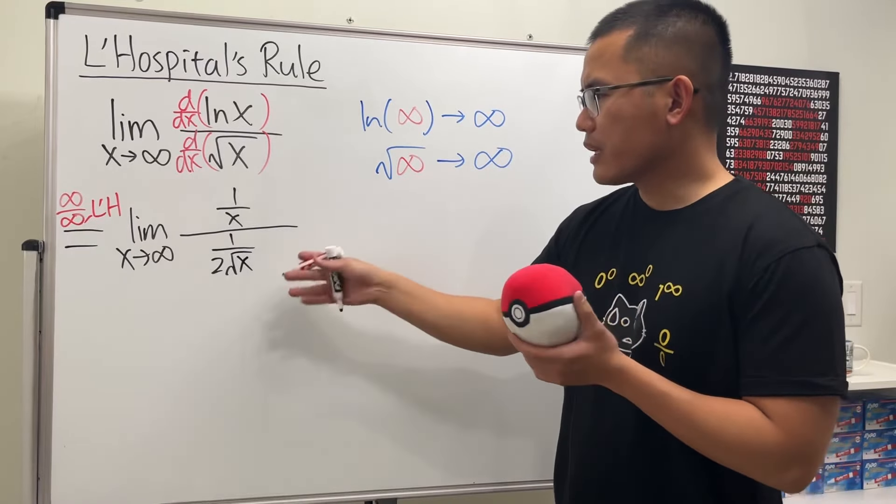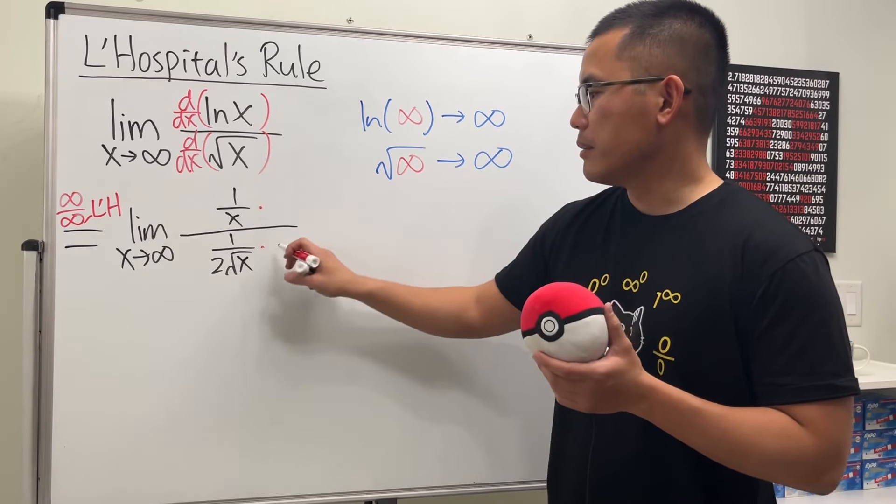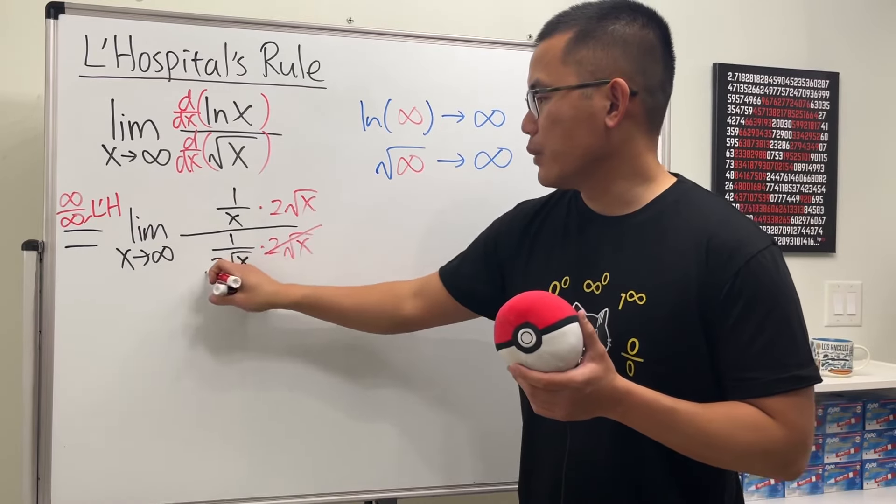Now, to get rid of this complex fraction situation, we can just multiply the top and bottom by this denominator, 2 square root of x. And that will cancel.